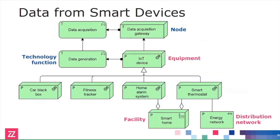This data acquisition gateway links to all kinds of smart devices. All these IoT devices feed their data into that gateway — they generate data from the equipment, which is then acquired by the gateway. Here we have some examples of these devices: black boxes in cars, trackers, your home alarm system, or your smart thermostat. The latter two are in this case part of a larger facility — in this case, your smart home.